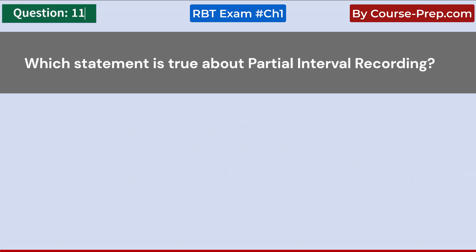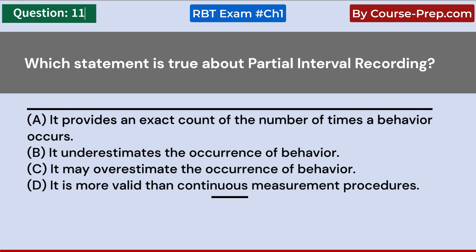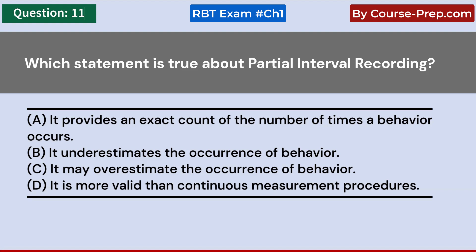Which statement is true about partial interval recording? A. It provides an exact count of the number of times a behavior occurs. B. It underestimates the occurrence of behavior. C. It may overestimate the occurrence of behavior. D. It is more valid than continuous measurement procedures. Answer C: It may overestimate the occurrence of behavior.